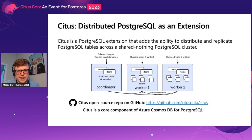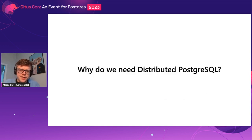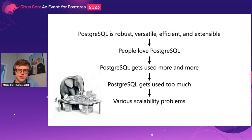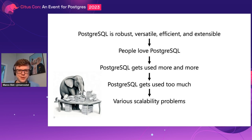You can also get a managed cluster using the Azure Cosmos DB for Postgres service. Now, why is something like Citus needed? Why do we want distributed Postgres? Well, it's pretty simple. Postgres is great — it's robust, it's versatile, it's efficient, it's extensible. People love it, it gets used more and more. It's still one of the fastest growing databases, but sometimes it gets used a little bit too much.